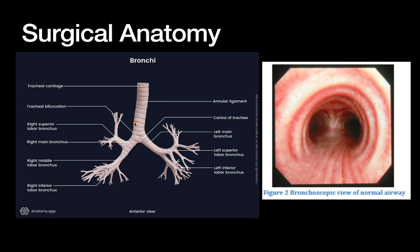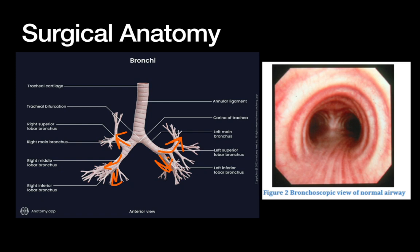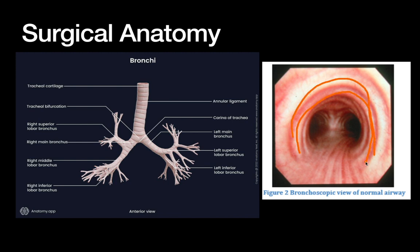Thinking about the bronchi that feed these segments: the trachea comes down and branches into right and left. Notice it's more of a straight shot down the right — the left has a bit more angle — which is why people typically aspirate down the right main stem bronchus. On the right there are three major takeoffs: right upper, right middle, and right lower. On the left, just upper and lower. When doing bronchoscopy, orient yourself by noting the trachea has incomplete cartilaginous rings — the membranous or muscular portion is posterior. So coming down the trachea, posterior is behind you, allowing you to identify right and left. You can confirm by driving into the right main stem bronchus, which has a very quick takeoff of the right upper lobe bronchus, whereas on the left you have to go a bit farther to reach that takeoff point.